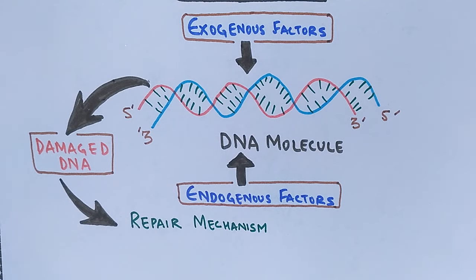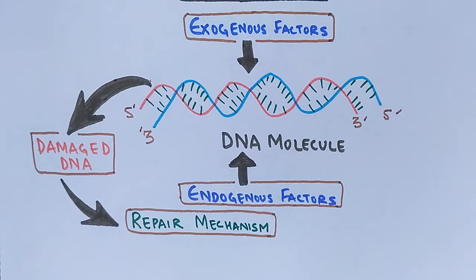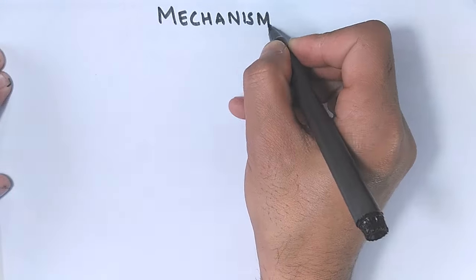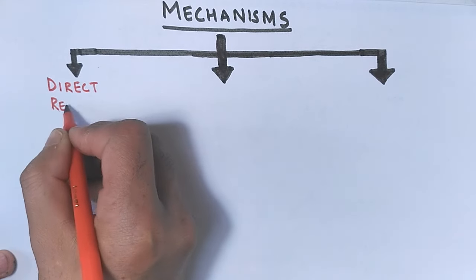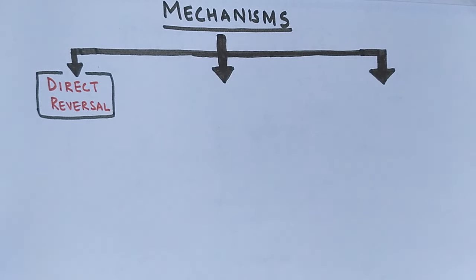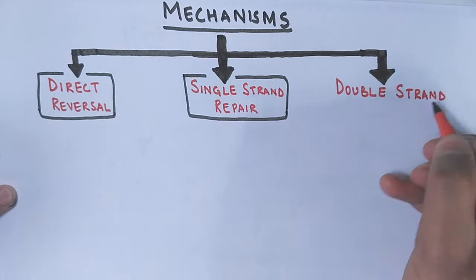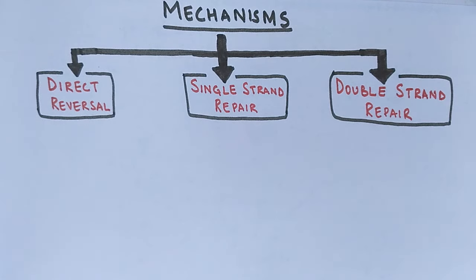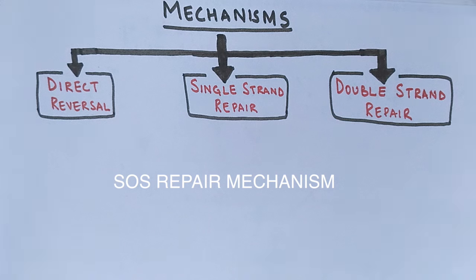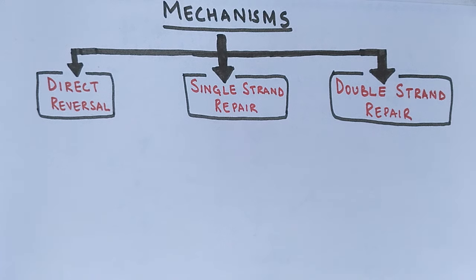There are three kinds of DNA repair mechanisms present within the cell: direct reversal repair is the first, single strand repair mechanism is the second, and double strand repair mechanism is the third. All three can operate depending on the kind of damage. In prokaryotes, direct reversal is present along with another method called SOS repair, whereas single strand repair and double strand repair are mostly present in eukaryotes.